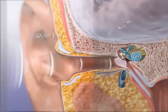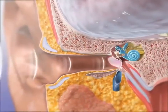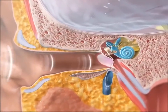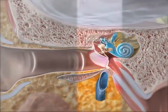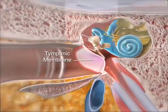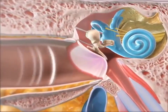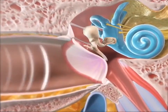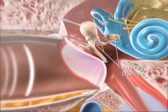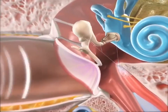The outer ear functions to funnel sound waves. The vibrations from these waves reach the middle ear and move the tympanic membrane, also called the eardrum. This causes three bones, called the auditory ossicles, to also move.